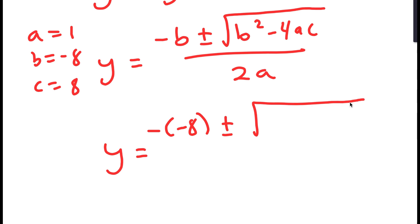If x equals 8 minus y and y is 4 plus 2 root 2, then x is equal to 8 minus (4 plus 2 root 2), which equals 8 minus 4 minus 2 root 2, which equals 4 minus 2 root 2. So the first solution is (4 minus 2 root 2, 4 plus 2 root 2).